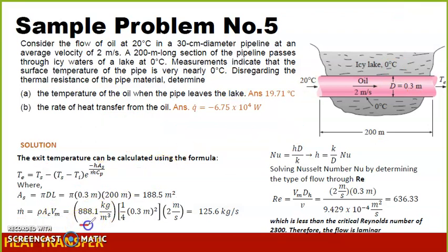Substituting, we already have density from our properties, the cross-sectional area of this pipe. The cross-sectional area is different from the surface area. The cross-sectional area is the area of the cross-section of the circle, which is pi R squared or pi over 4 D squared, times the velocity of the oil, which is 2 meter per second.